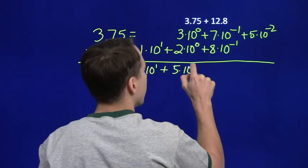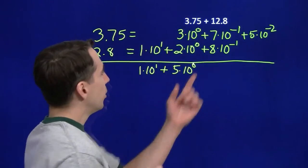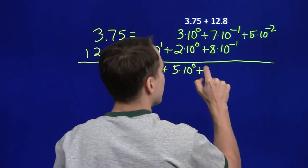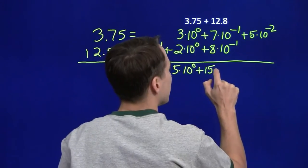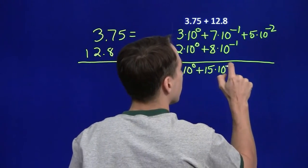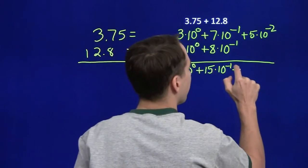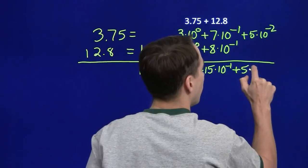It's kind of like adding 3x and 2x. And over here we have 7 tenths and 8 tenths. That gives us 15 tenths. And then over here we still have the 5 hundredths all by itself.